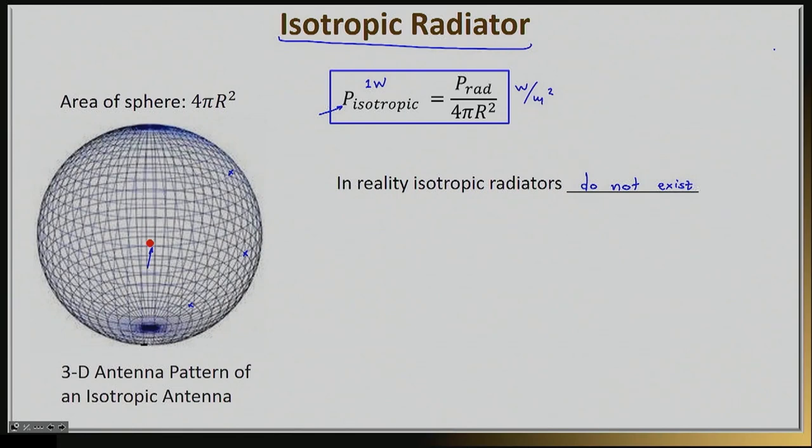For example, when we define gain of an antenna, we will define gain compared to an isotropic radiator. As you can see here, the power density that you feel is actually a function of distance. It's a function of the radius of that sphere.